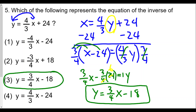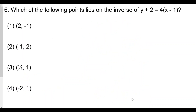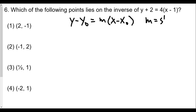Remember: to find the inverse of a function, switch x and y, then solve for y. Now question six is interesting because the function is in point-slope form: y minus y-sub-zero equals m times (x minus x-sub-zero), where m is the slope and (x-sub-zero, y-sub-zero) is a point on the line.